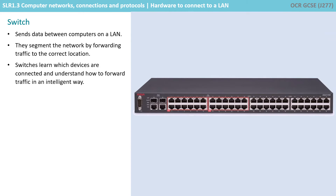A switch sends data between computers on a local area network. They effectively segment the network by only sending traffic to the correct device on another switch. They learn where devices are on the network by reading the from address on each packet that they receive. If they recognise the to address, they can route data packets to the correct connection. If not, they will broadcast the packets to all connections. Switches very quickly learn which computers are connected and build up an internal index.